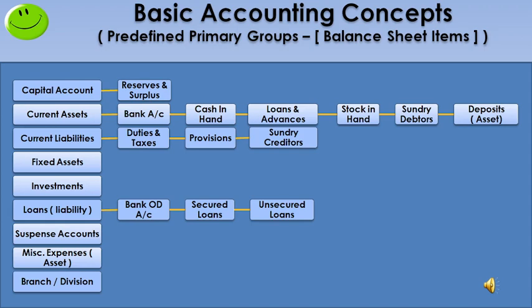Next, current asset — it is a primary group. A current asset is in the form of cash, or equivalent to cash, or anything that can be converted into cash quickly. It has three subgroups. First, bank account — balances available in the company's holding banks and bank-related transactions come under this group. Next, cash in hand — even though most transactions are digital, every company needs to keep some cash physically for day-to-day expenses. Next, loans and advances — money paid in advance to employees to meet urgent needs, deducted in monthly installments.